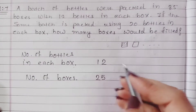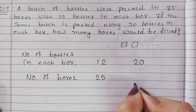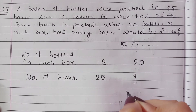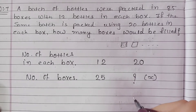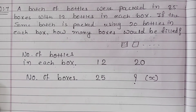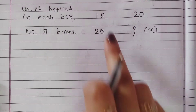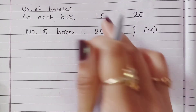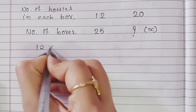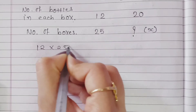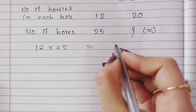If we have 20 bottles in each box, how many boxes are there? We suppose this to be x. Now, for inverse proportion, we multiply: 12 multiplied by 25 is equal to 20 multiplied by x.